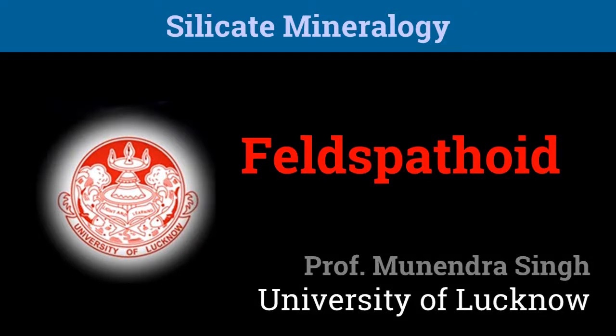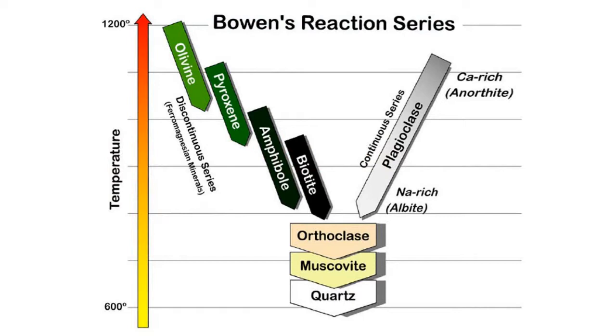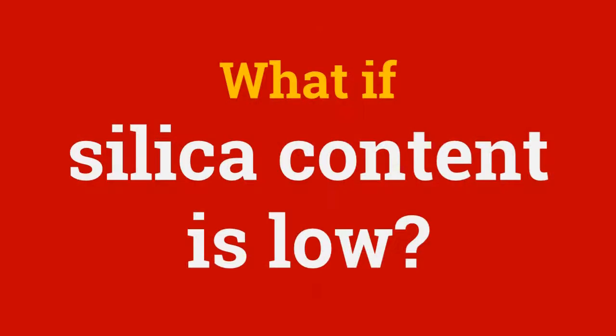In this presentation, we will discuss feldspathoids. Bowen's reaction series represents the normal crystallization of magma when it is silica rich. It is due to this abundance of silica that we are able to get quartz in the end. But what would happen if the silica content is low in magma? We would have no quartz and no feldspar, and the mineral which will form is called feldspathoids.